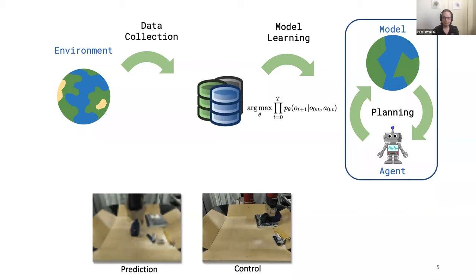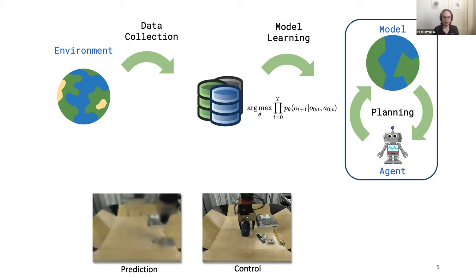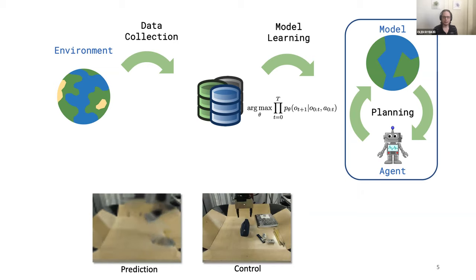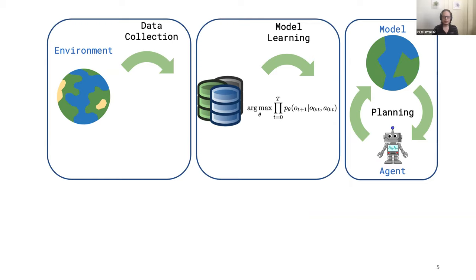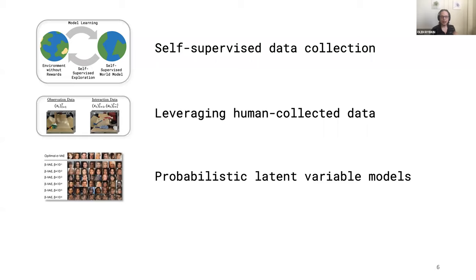So this is why I'm interested in visual model-based reinforcement learning: it's model-based so it can capture general knowledge about the world; learning because designing models is hard; and visual because we don't want to be restricted by a manual design of the state space. To make this scalable to very complex tasks, we need to improve every part of the pipeline, which we can divide into three parts: data collection, model learning, and planning. Today I'm going to tell you ideas on how to improve each of these three parts.